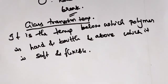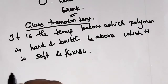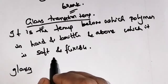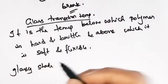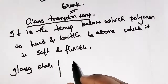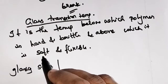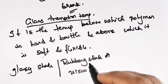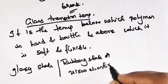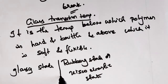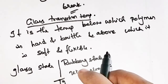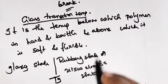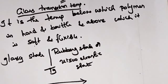We call the hard and brittle state of the polymer the glassy state. Above Tg, where the polymer is flexible and soft, we call it the rubbery state — also called the viscoelastic state. So Tg is the temperature boundary: below it the glassy state exists, above it the rubbery state exists.